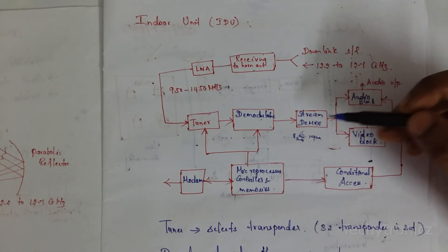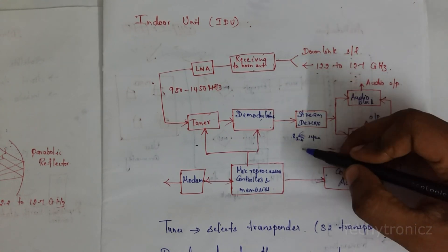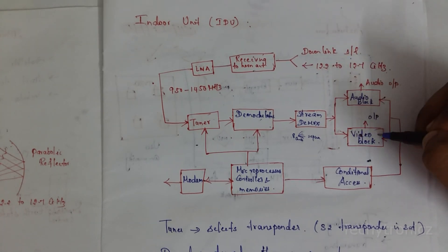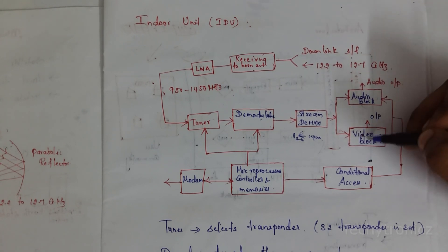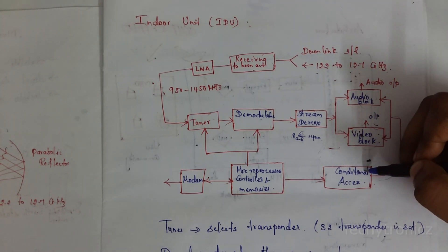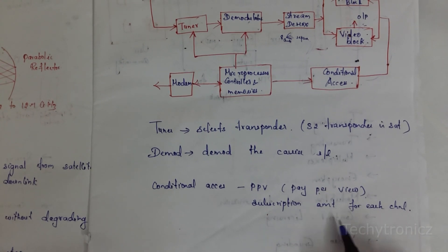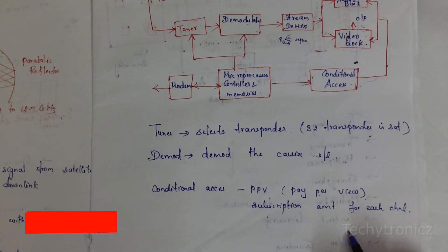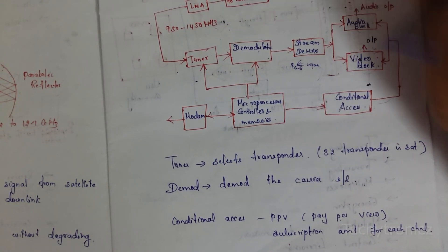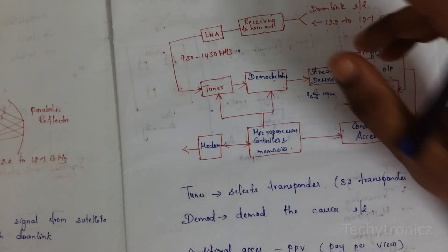The demodulated signal is given to the stream demux. If there are 8 programs, the stream demux separates each program into individual audio and video blocks, providing audio output and video output separately. Then it goes to conditional access, which is the Pay-Per-View (PPV) system — according to the subscription amount, we can view different channels. From conditional access, it uses a microprocessor or microcontroller with memories, and then a modem to view the programs.